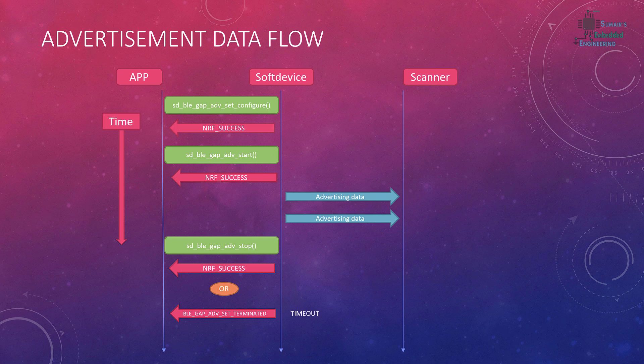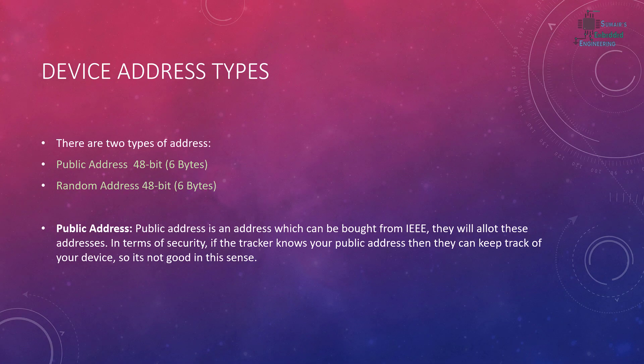We have already seen how advertisement works: first the configuration is done, then we receive a success message, then we start the advertisement. If successfully started, the device gives an NRF success message and advertises its data on air for scanners to detect. If you haven't seen the previous tutorial, go watch it — I'll go through this quickly today.